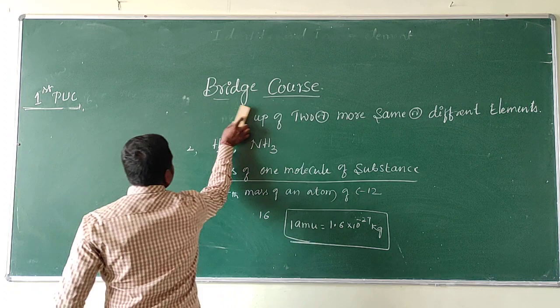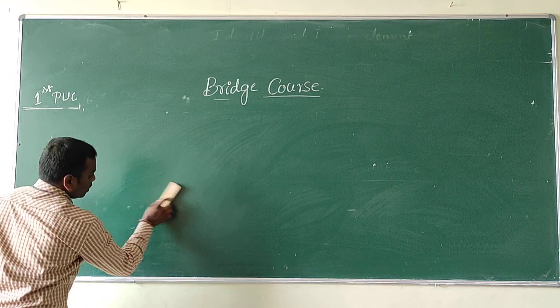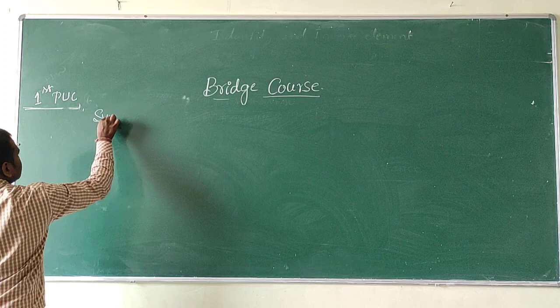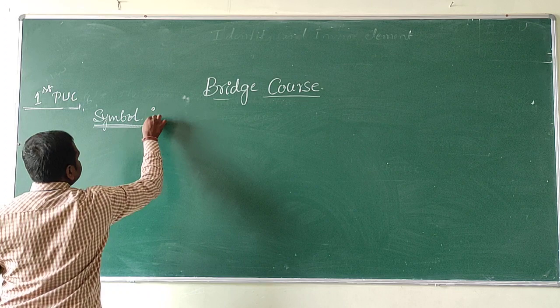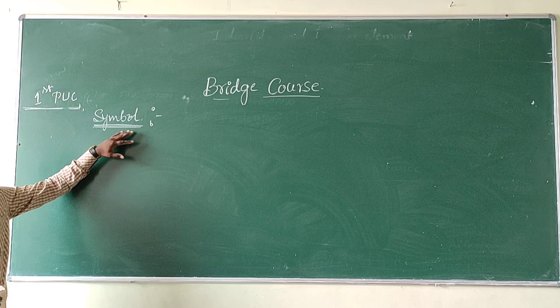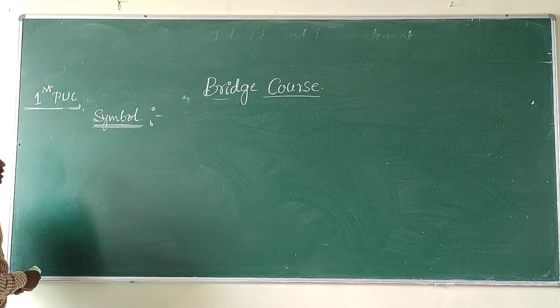Now, let us consider what is symbol. Oxygen has a symbol. Nitrogen has a symbol. Symbol means the abbreviation used for the name of elements. This abbreviation of the name of an element is called as a symbol.